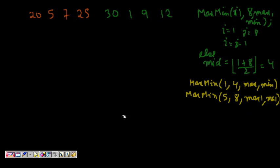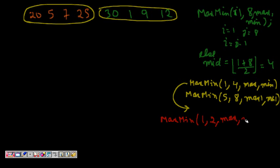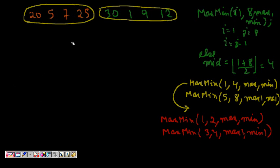Going into max-min(1, 4): again i is not equal to j and not equal to j-1, so mid = (1+4)/2 = 2. We call max-min(1, 2) and max-min(3, 4). Similarly, for max-min(5, 8), mid = (5+8)/2 = 6, splitting into sub-problems on elements {30, 1} and {9, 12}.